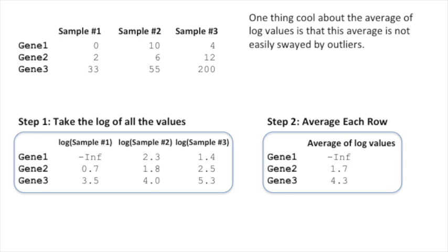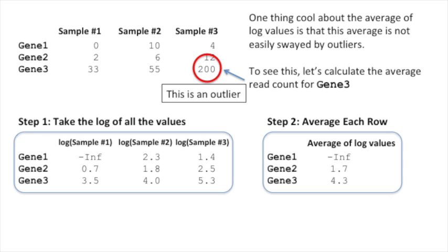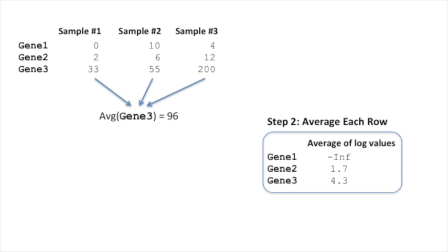One cool thing about the average of log values is that the average is not easily swayed by outliers. To see this, let's calculate the average read count for gene 3. We see that the read counts for gene 3 in sample number 3 are really high. That makes it an outlier. If we just average the raw read counts for gene 3, we get 96.